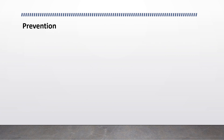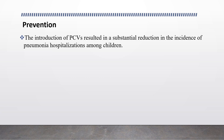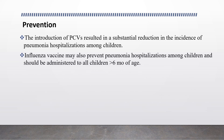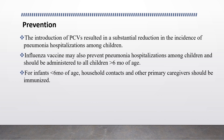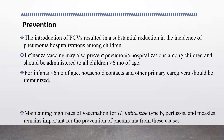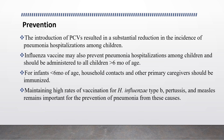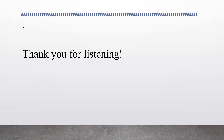Regarding prevention, the introduction of pneumococcal conjugate vaccine has resulted in substantial reduction in the incidence of pneumonia hospitalization among children. Influenza vaccine may also prevent pneumonia hospitalization and should be administered to all children greater than six months of age. For infants less than six months of age, household contacts and primary caregivers should be immunized. Maintaining high rates of vaccination for H. influenzae type b, pertussis, and measles remains important for prevention of pneumonia from these causes.